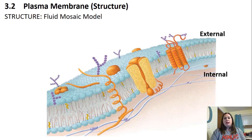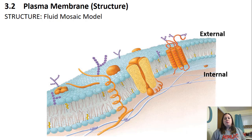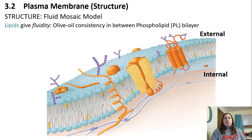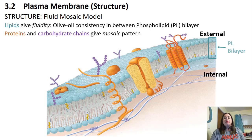Taking a closer look at the plasma membrane: it has a fluid mosaic model structure. It's a fluid sea of phospholipids shown in blue, and the mosaic part is proteins embedded here and there. The lipids give it fluidity — kind of an olive oil consistency — within the phospholipid bilayer, meaning it has two layers. The proteins and carbohydrate chains shown in orange and purple give it the mosaic pattern, looking very unique as they float in this ocean of fats.